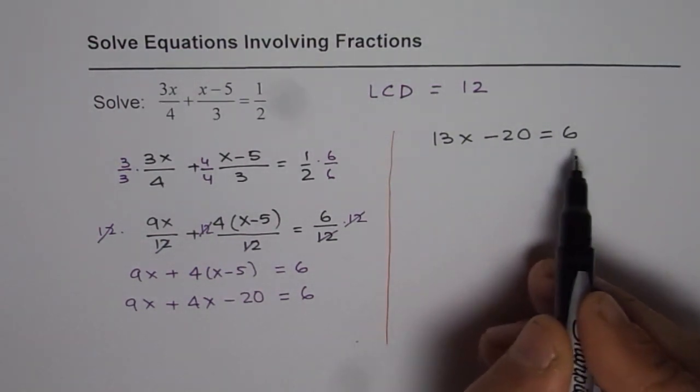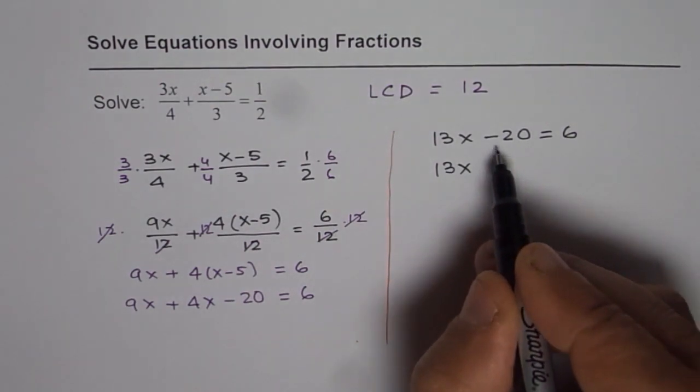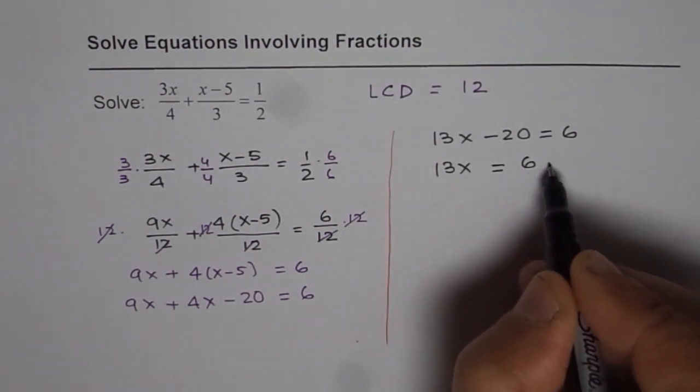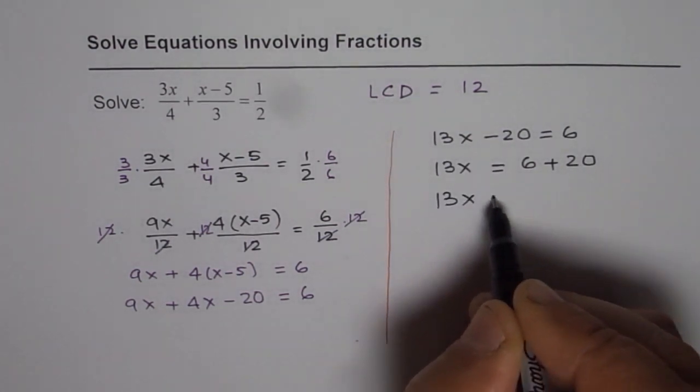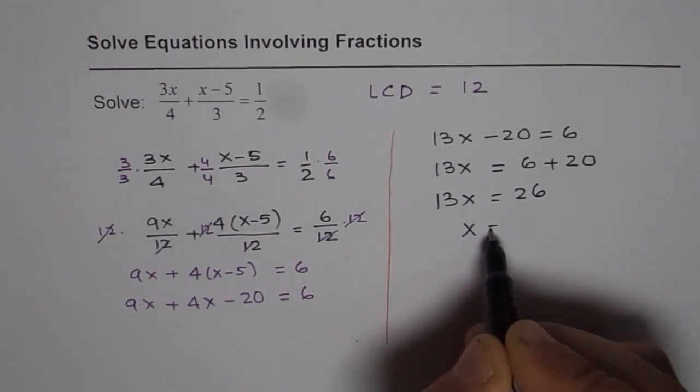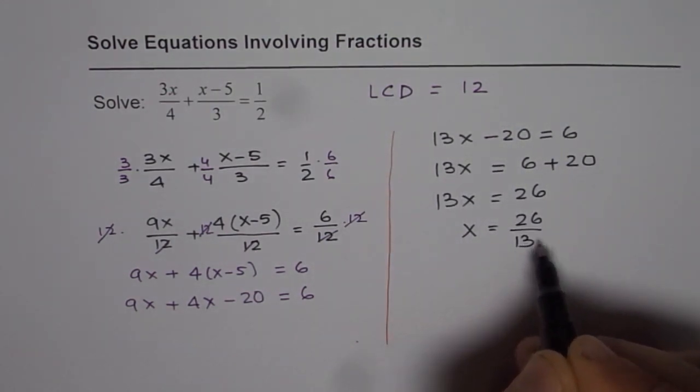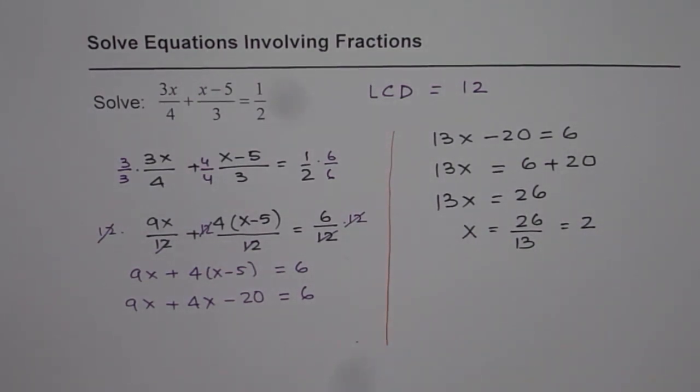Now we can add 20 on both the sides. So we get 13x. When you add 20 here it becomes 0, so we get equals to 6 plus 20. So we have 13x equals to 26. We can divide by 13. So we get x equals to 26 over 13 which is equals to 2. So x equals to 2 is our solution.